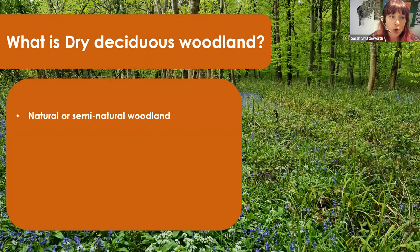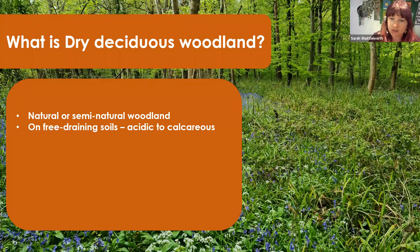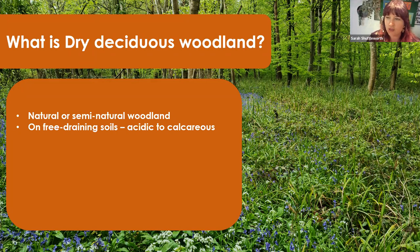What is dry deciduous woodland? Essentially with NPMS we're looking for natural or semi-natural woodland, usually on free-draining soils that are either acidic, calcareous, or somewhere in between. The free-draining element means the floor of the woodland isn't completely saturated with pools and lots of wet elements — you might still get puddles after heavy rain, it just means it's not permanently waterlogged.